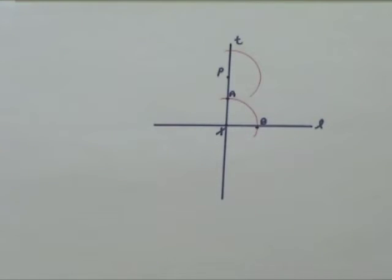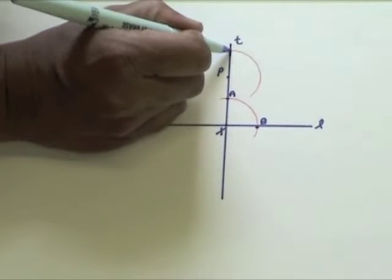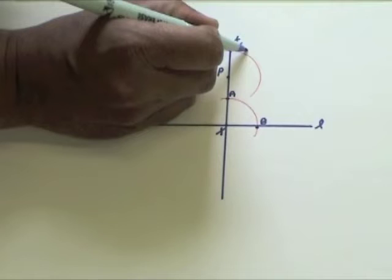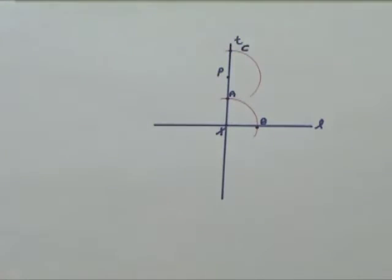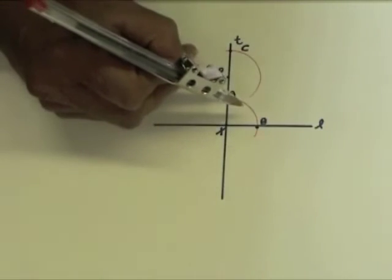Label the point of intersection as C. To construct angle P with the same measure as angle X, place the compass point on A and C. Then adjust the compass width to the length AB.